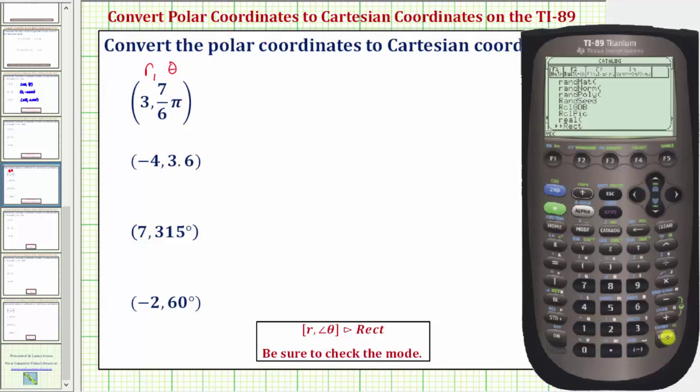Here it is, so we press enter and enter. Now we have the exact rectangular or Cartesian coordinates. X equals negative three square root three divided by two and Y equals negative three halves.